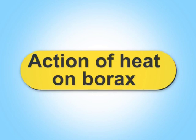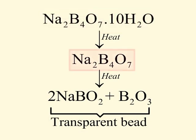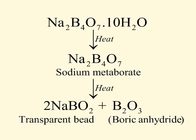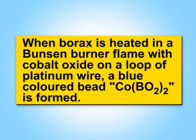We will now learn about action of heat on borax. When powdered borax is heated in the flame of a Bunsen burner, it first loses water and swells up. On further heating, it turns into a colorless transparent glassy bead called borax bead made of sodium metaborate and boric anhydride. The metaborates of many transition metals have characteristic colors and therefore borax bead tests can be used to identify them in the laboratory. For example, when borax is heated in a Bunsen burner flame with cobalt oxide on a loop of platinum wire, a blue colored bead is formed.